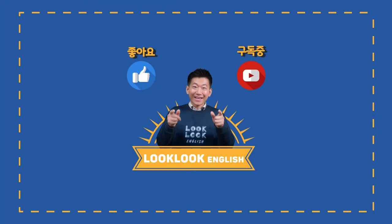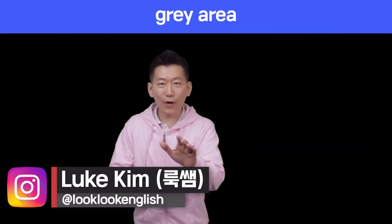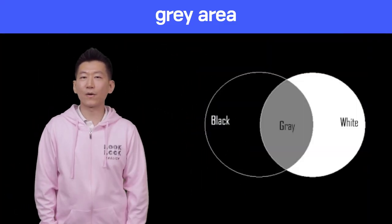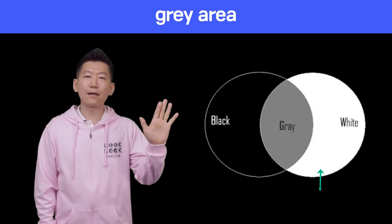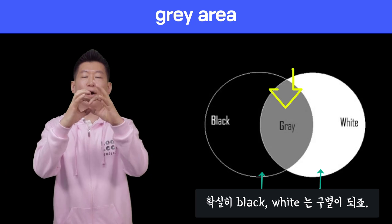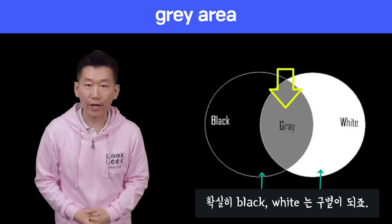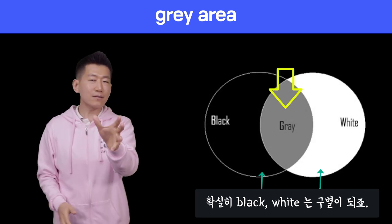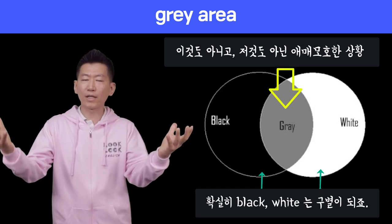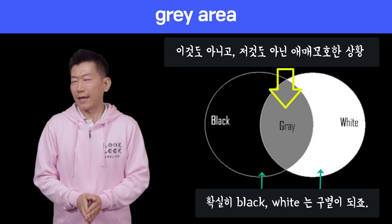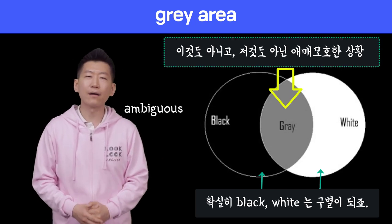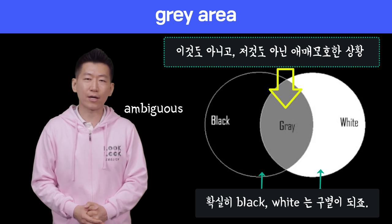오늘 표현은 'gray area'입니다. Gray는 회색을 말하는 거죠. 이쪽에 white가 있고, 이쪽에 black이 있습니다. 여기 중간에 보면 gray area라고 하죠. 우리가 어떠한 상황을 봤을 때, 그 상황이 정확하게 이것도 아니고 저것도 아닌, 되게 애매모호한 상황이 있을 때 — 영어로는 'ambiguous'라는 표현을 사용하는데요 — 그런 상황을 바로 gray area라고 합니다.